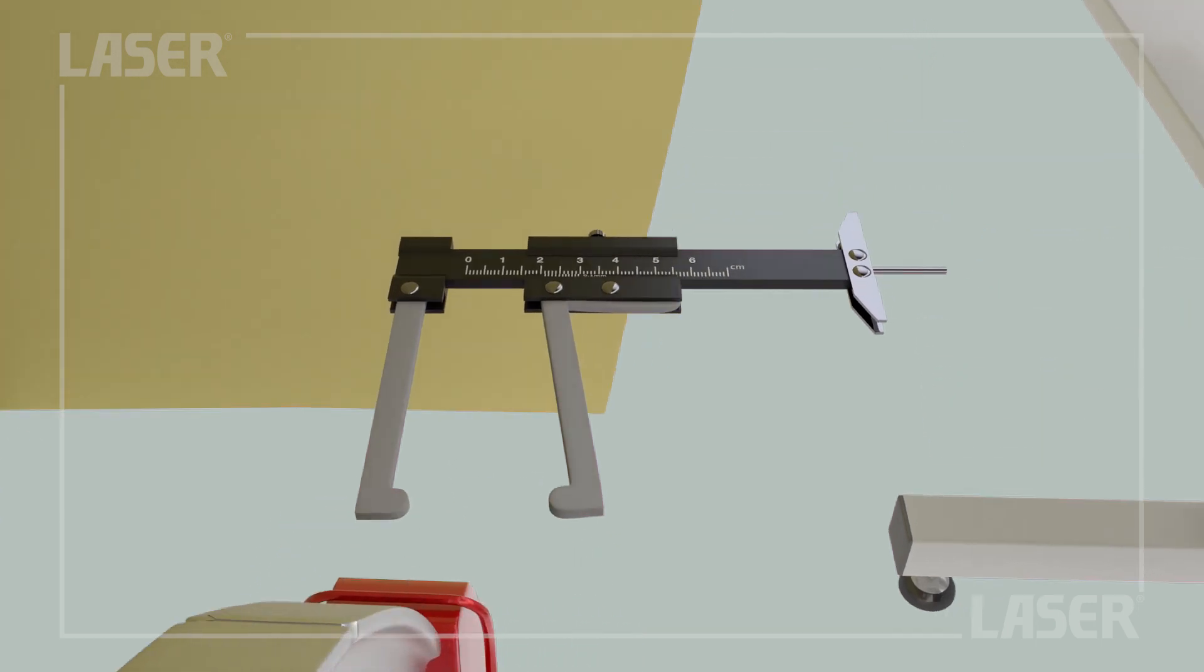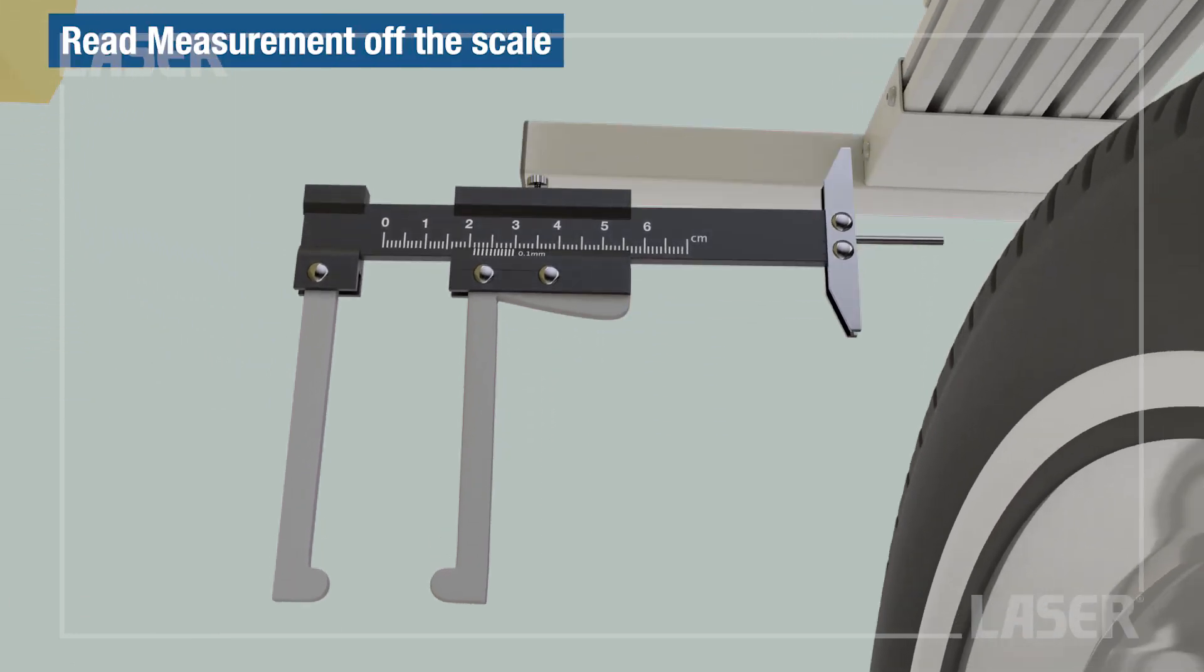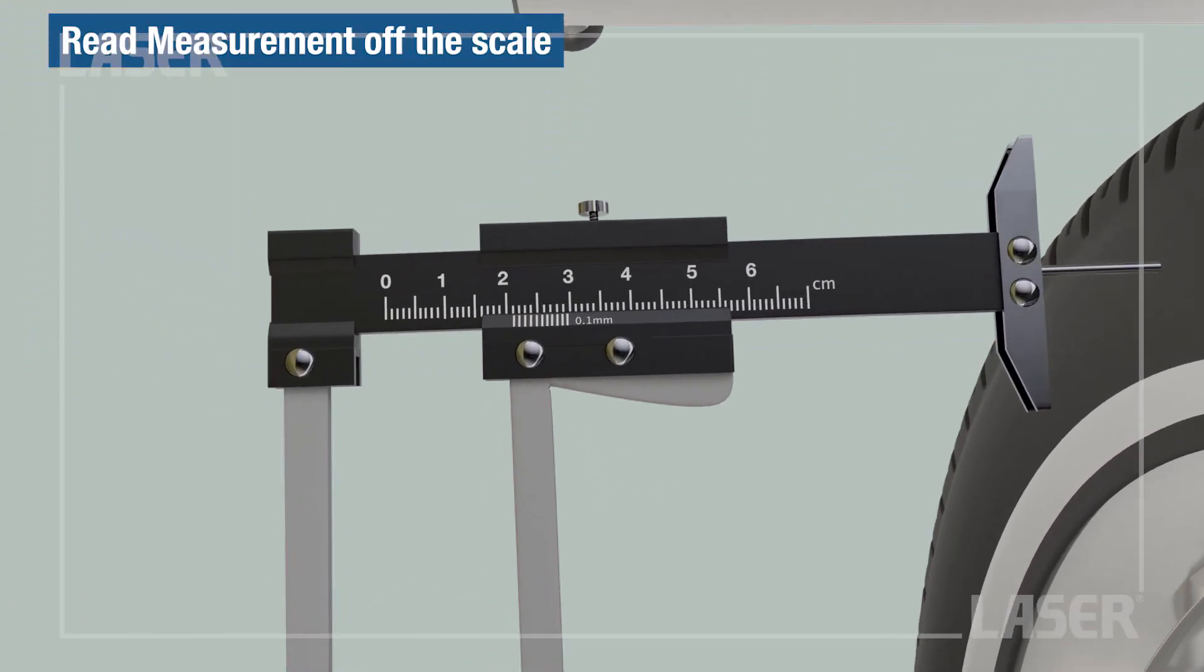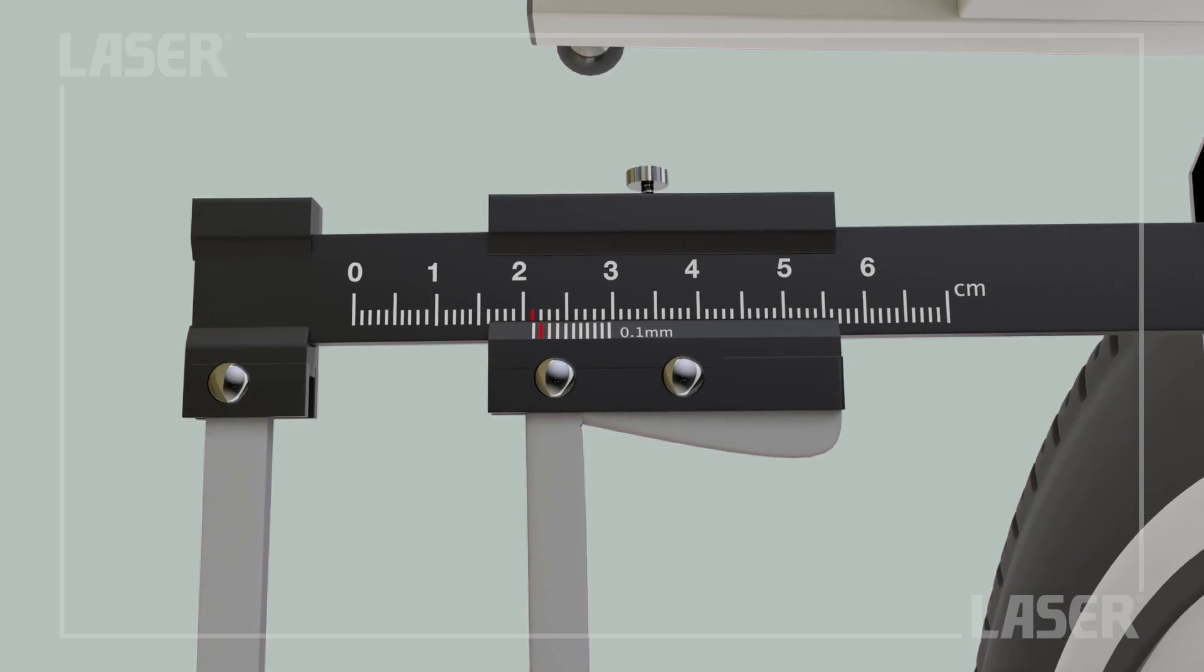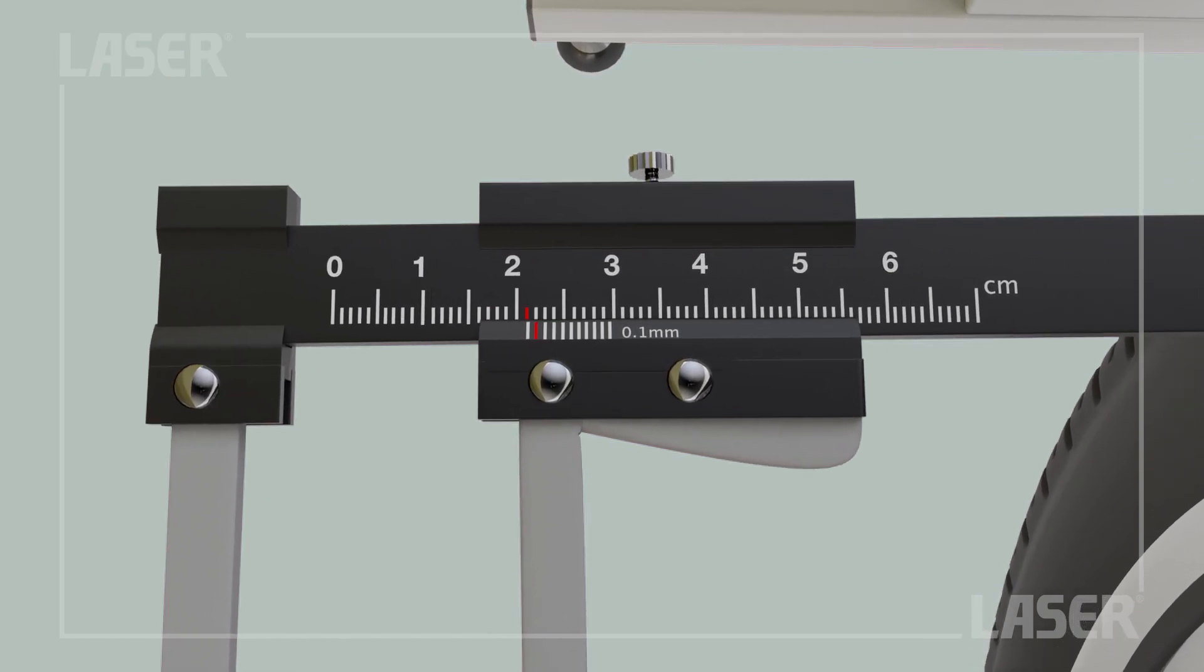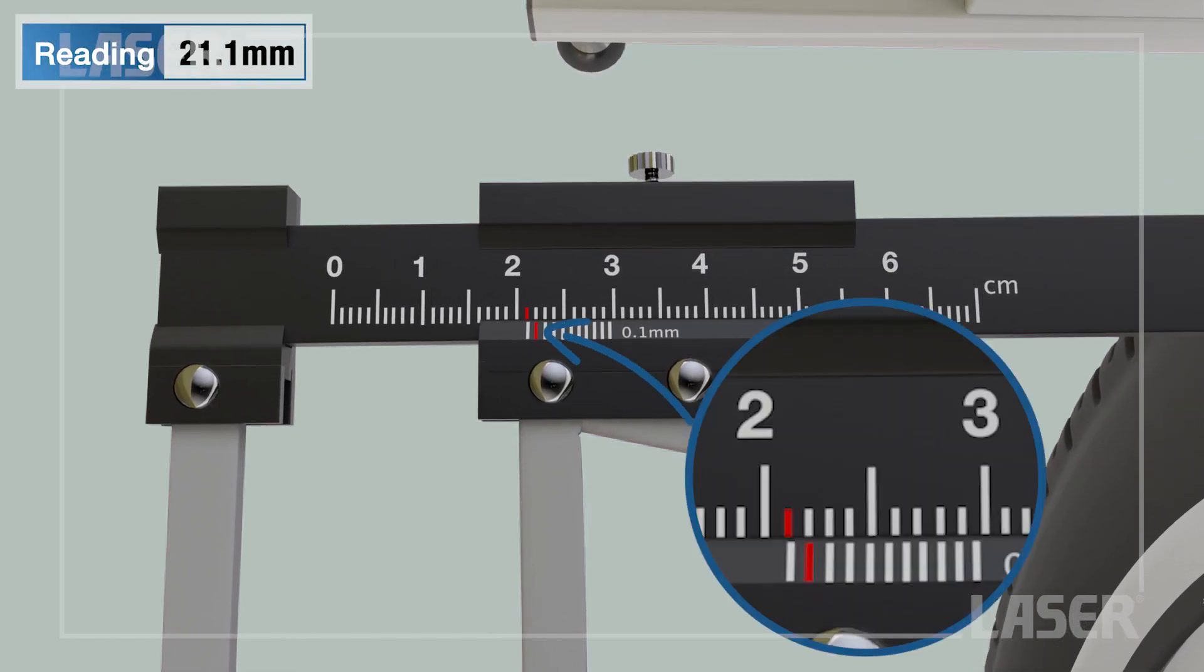For complete accuracy we can read off to tenths of a millimeter. Read off the lower scale to the closest measurement on the upper scale. The first mark on the lower scale is zero. Here the lower zero mark is closest to the 21 mark on the upper scale.